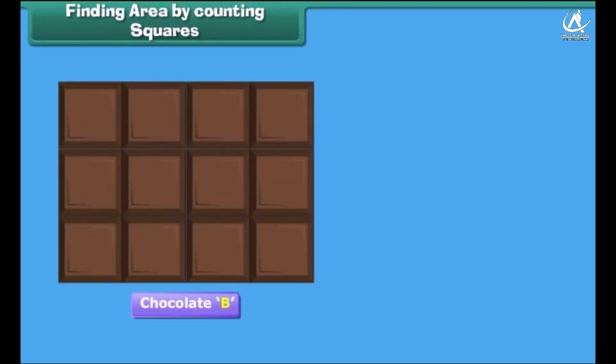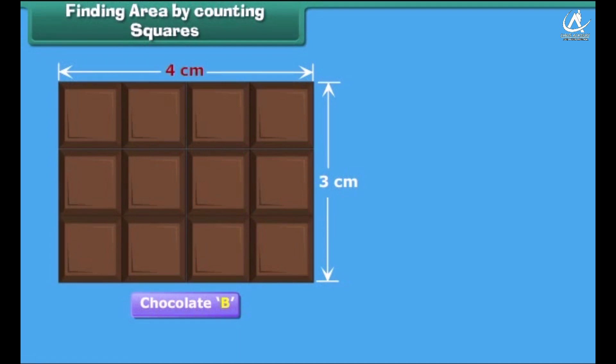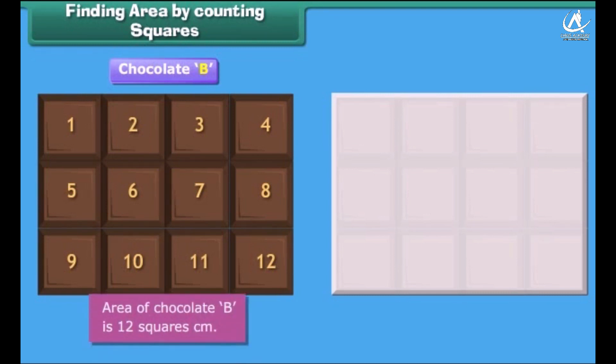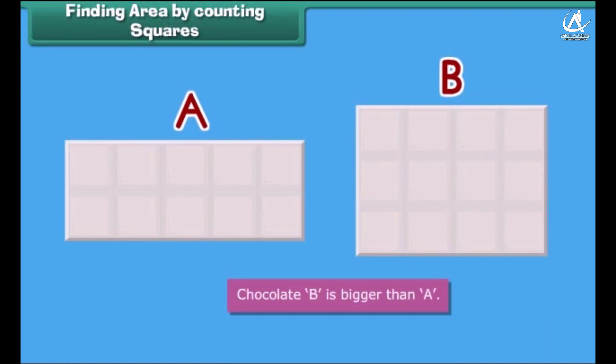So the area of chocolate A is ten square centimeters. Now, let us find the area of chocolate B. The length of chocolate B is four centimeters and its width is three centimeters. Four squares can be arranged along its length and three squares along its width. In total, twelve squares can be arranged on this chocolate, so its area is twelve square centimeters. Among chocolates A and B, chocolate B is bigger in size.